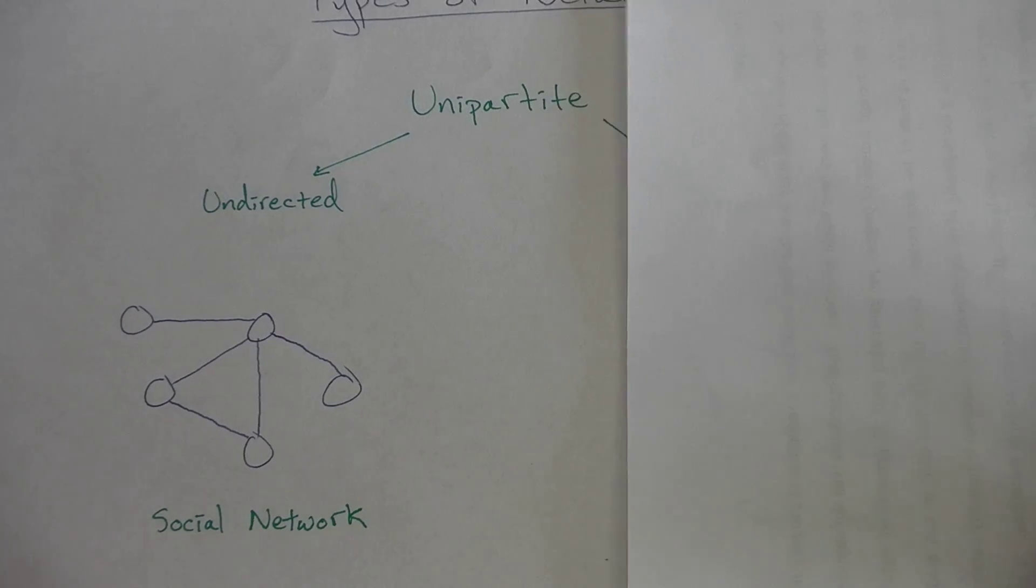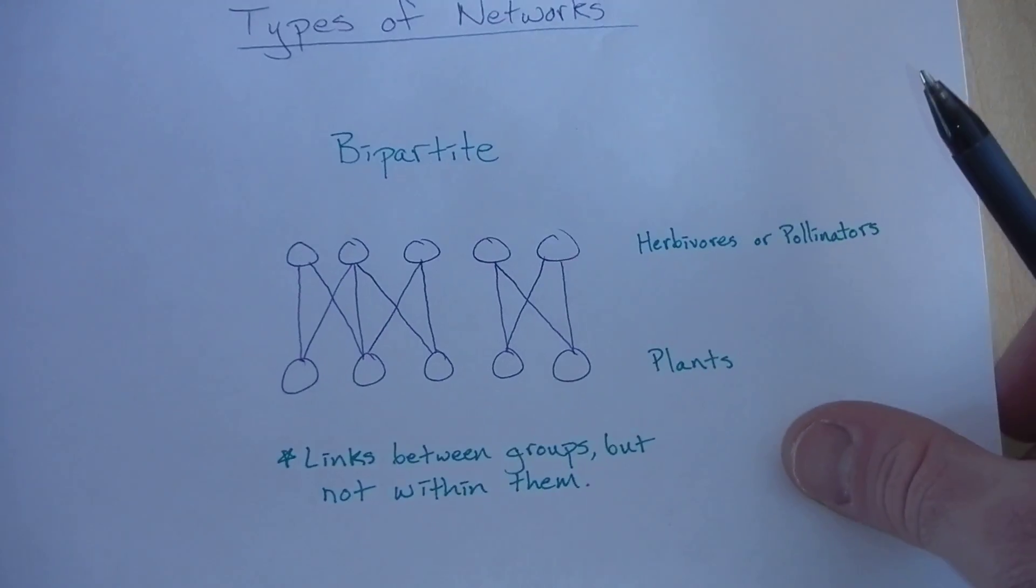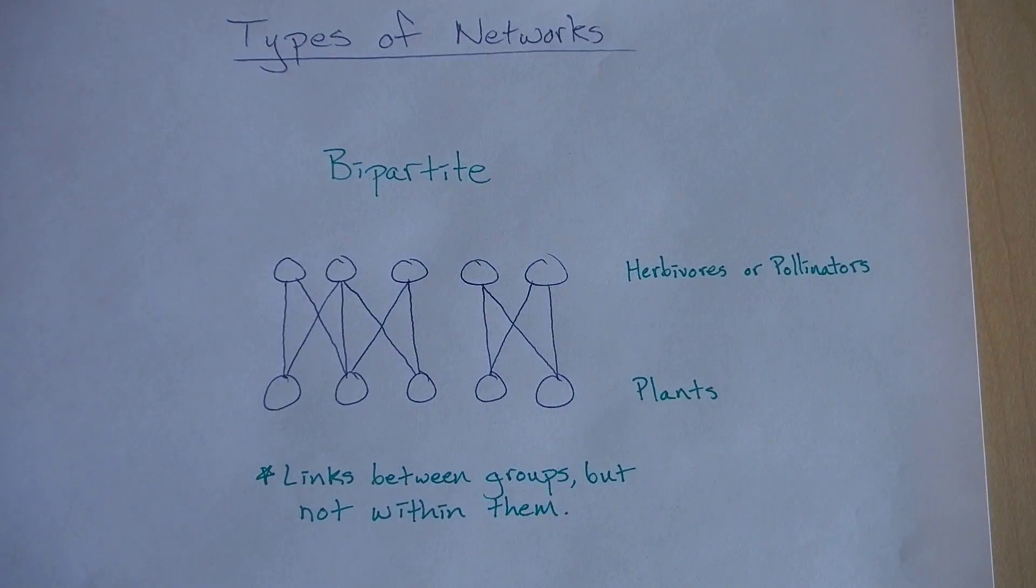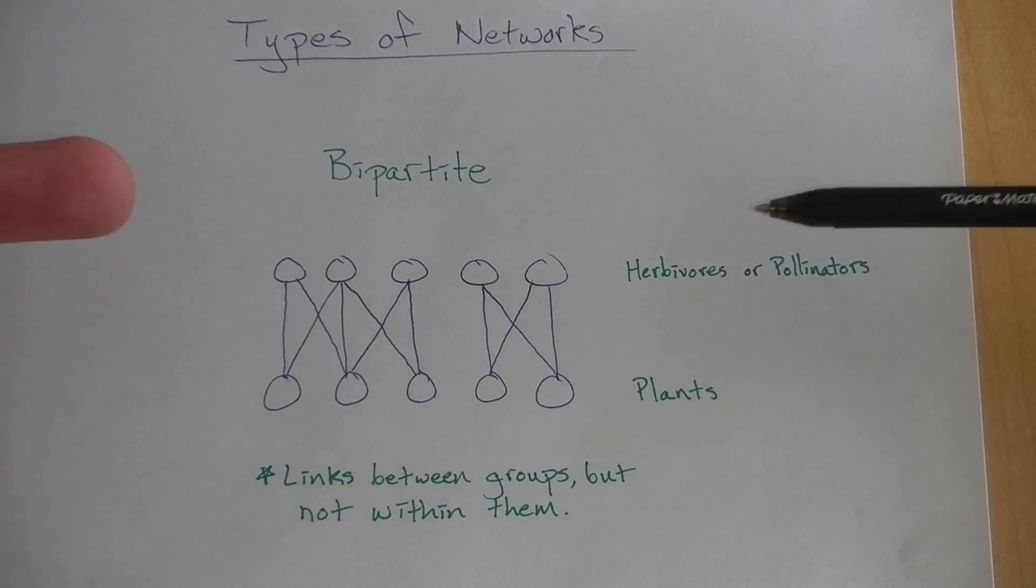So now that we know what unipartite networks are, the other type of network that is common in ecological research is a bipartite network. Bipartite networks typically have two different groups.